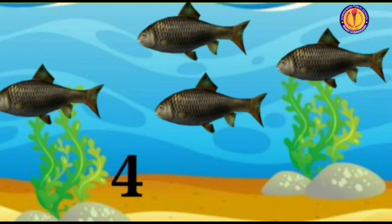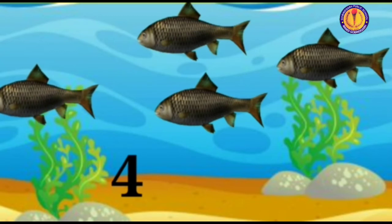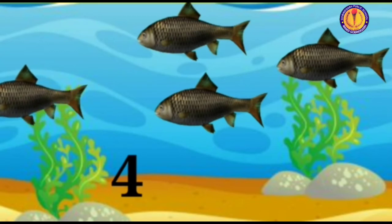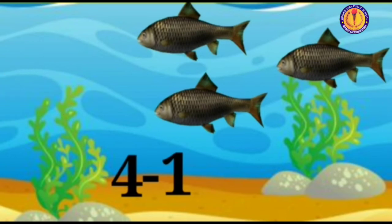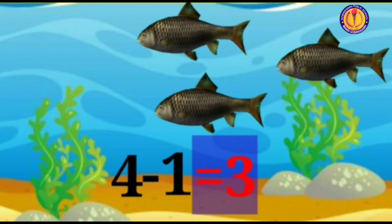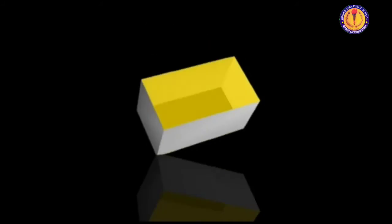You can see four fish in the water. One fish swam away. Can you tell how many fish are left in the water now? 4 minus 1 is equal to 3. Only 3 fish are left in the water now.